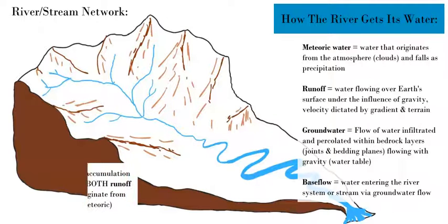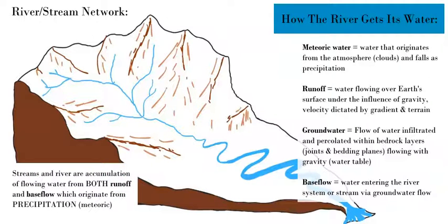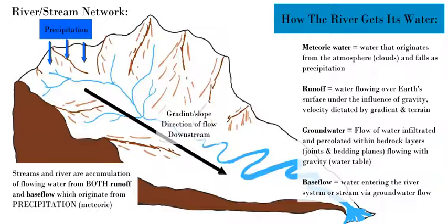Where does this water come from? Water accumulates at the lowest elevation point on the Earth's surface, depending on elevation and terrain — some areas are more mountainous, some flat, with different gradients and steepness. The water mostly accumulates from precipitation — meteoric water, which originates from the atmosphere and falls as precip. It could also come from snowmelt or glacial melt at high elevations. Meteoric water then flows within a catchment area, drainage basin, or watershed, where topography and contours dictate which direction water flows, accumulating into one stream.